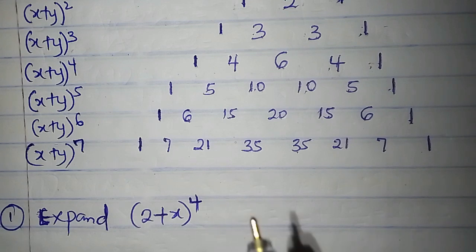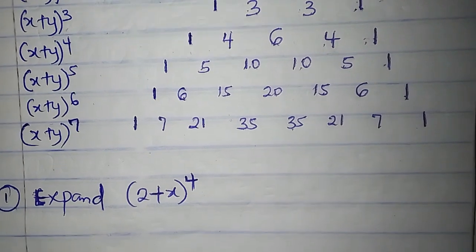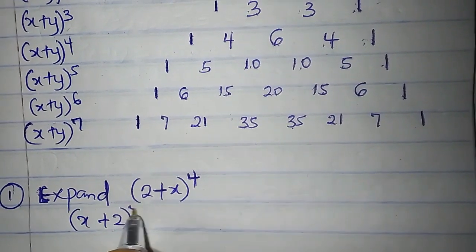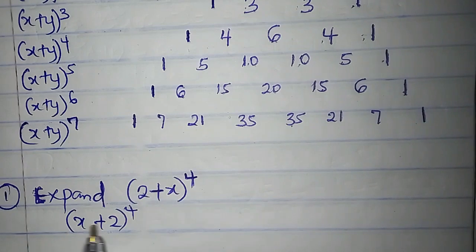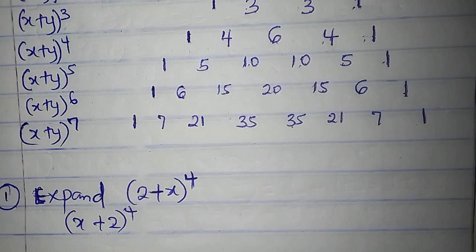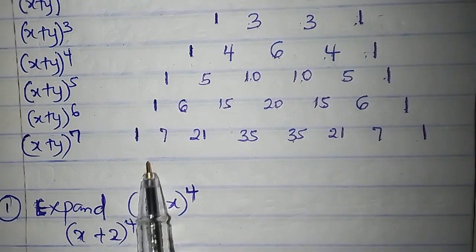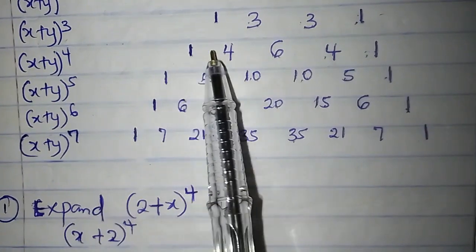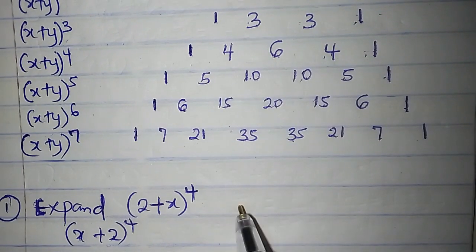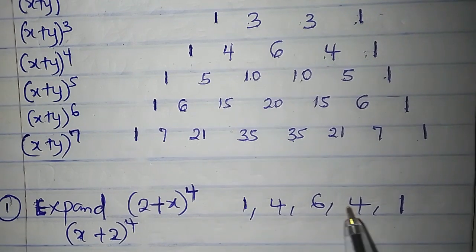I'm going to make use of this Pascal's triangle. Allow me to write 2 plus x to the power 4 as x plus 2 to the power 4 — it's the same thing. I always like to write my x before the number. Even if you expand it the other way, we will obtain the same result. x plus 2 here is to the power 4, so that means I'm going to make use of this coefficient: 1, 4, 6, 4, 1.